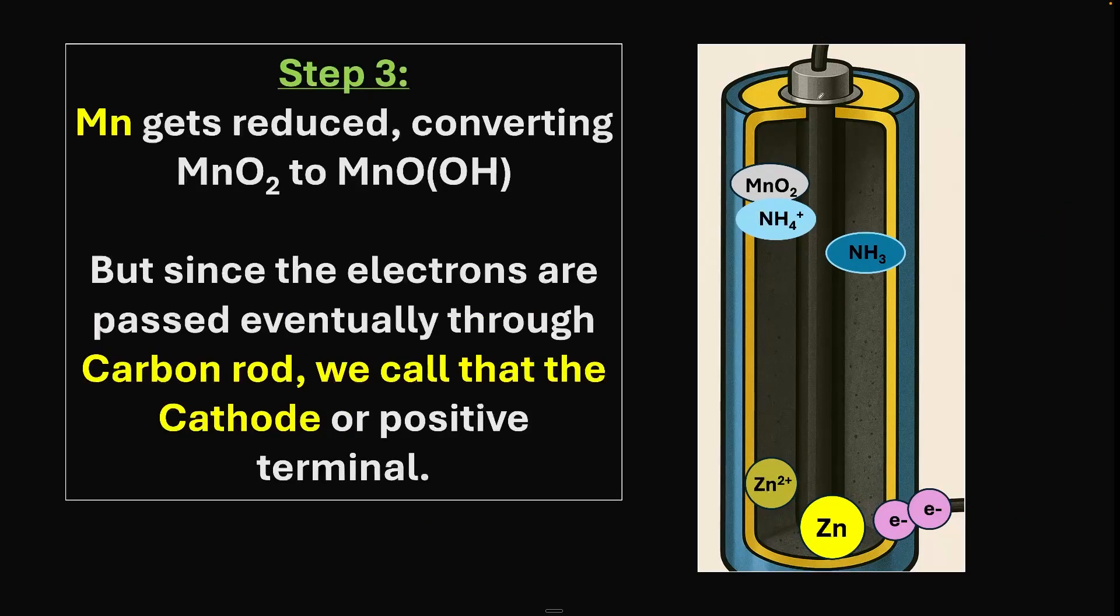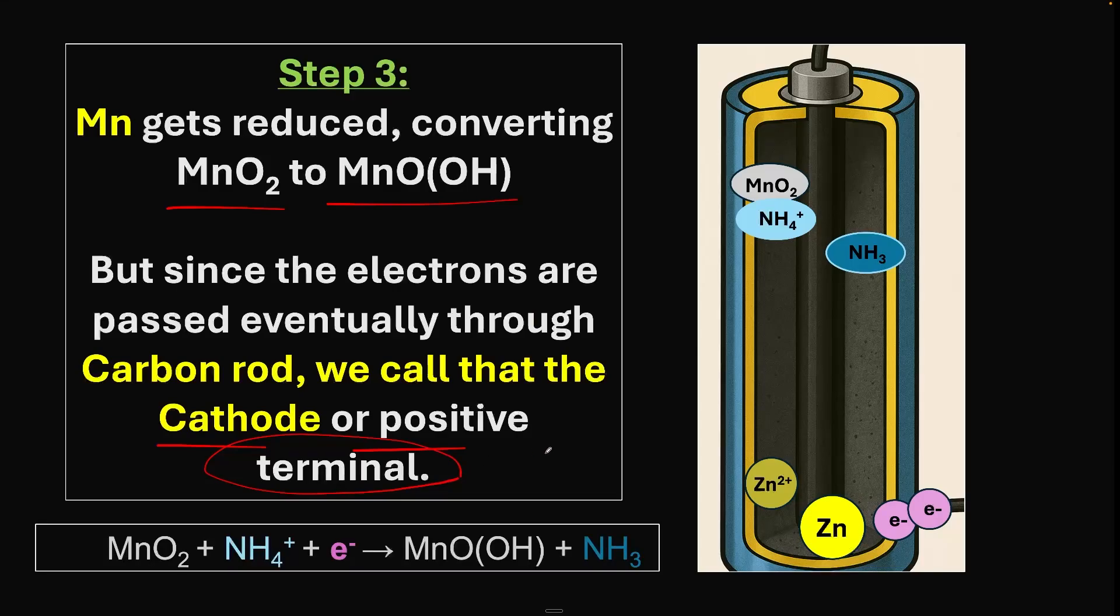Step three: manganese dioxide gets reduced, converting to manganese oxide hydroxide. Since electrons pass through the carbon, we call that the cathode. The actual reduction happens in the manganese dioxide. The reaction is: MnO₂ plus NH₄⁺ plus electron gives MnO(OH) plus NH₃.